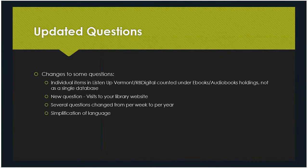Changes to some questions: first, under holdings — previously items in Listen Up Vermont or RB Digital were not necessarily included under e-books and audio books. They were maybe included under a database, depending on whether they were in your catalog. We're just going to change that. All your Listen Up Vermont and RB Digital items are going to go under e-books and audio book holdings. For RB Digital, you should already be getting an email that tells you what your holdings are. For Listen Up Vermont, we'll work with GMLC if you don't already have that information.